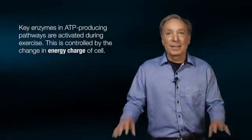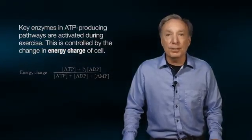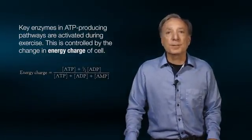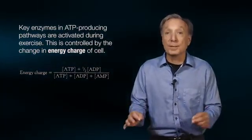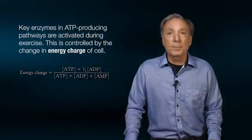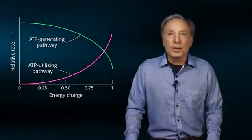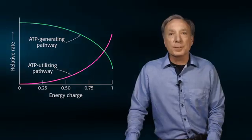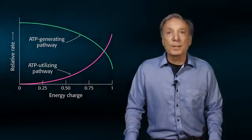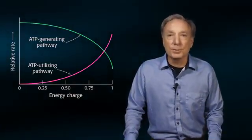This sensing is primarily controlled by the energy charge of the cell, shown here. Basically, when the concentration of ATP in the muscle cell drops below normal resting levels, the energy charge drops and ATP-producing pathways are activated. At rest, the energy charge in muscle is approximately 0.85.